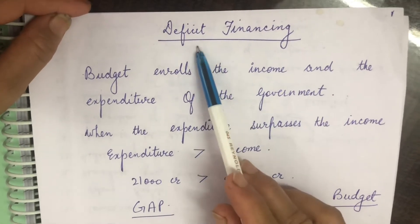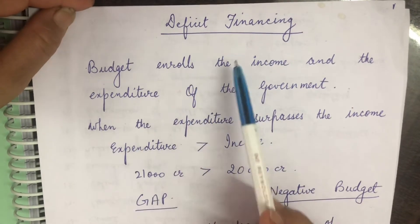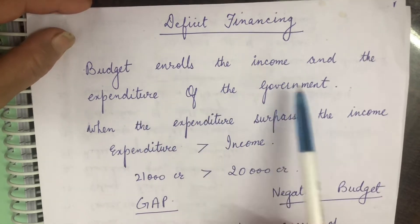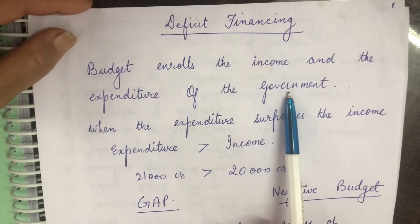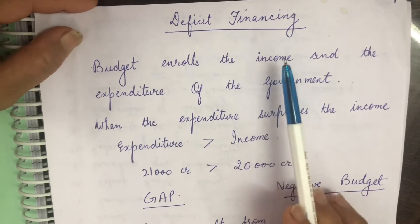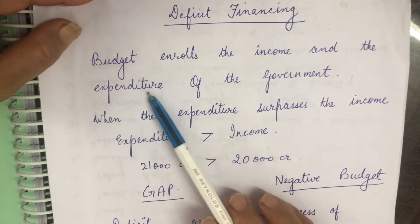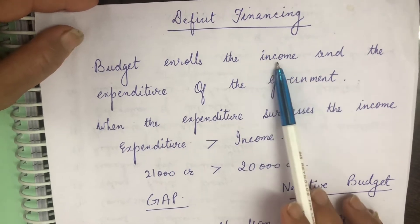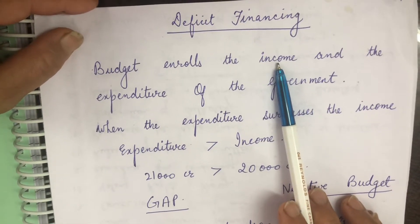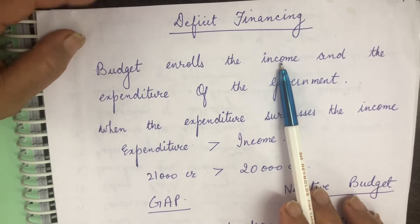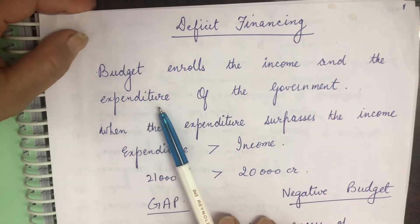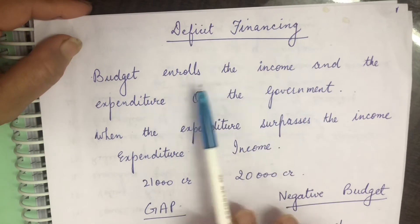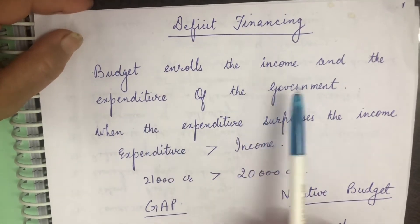The topic for today is deficit financing. We'll start with budget. Budget enrolls the income and expenditure of the government. The income of the government comes from the revenue. Revenue can be described as a source of money. It enrolls the income and expenditure of the government.